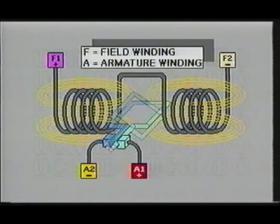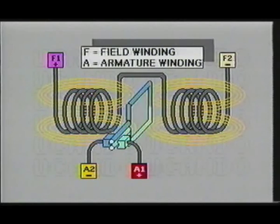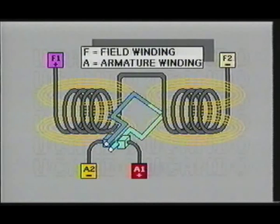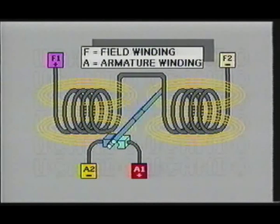Another difference you will see later in your servo training is that the brushed DC motor can be controlled by varying either the field voltage or the armature voltage.